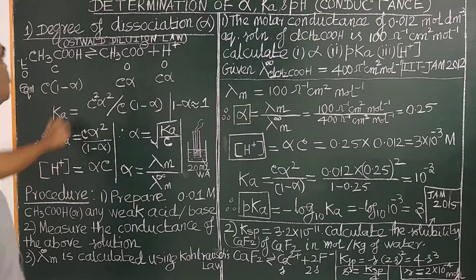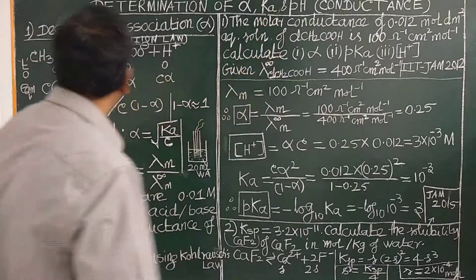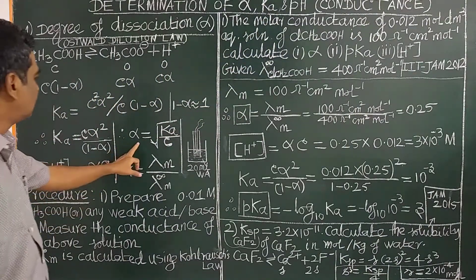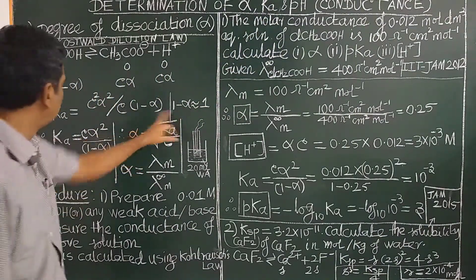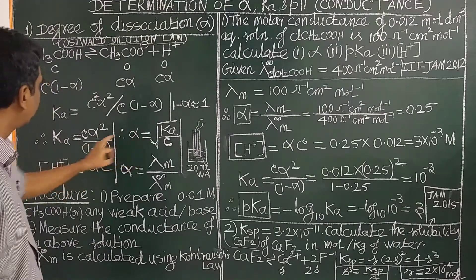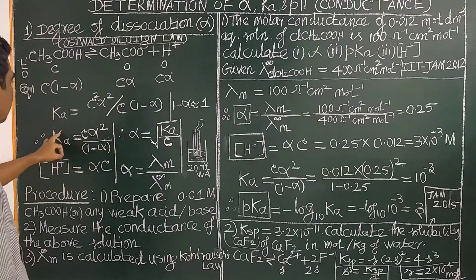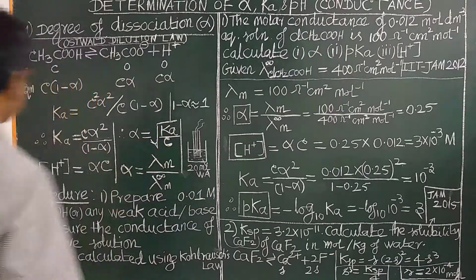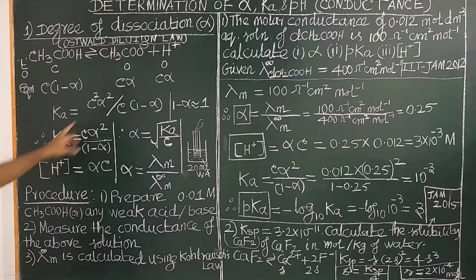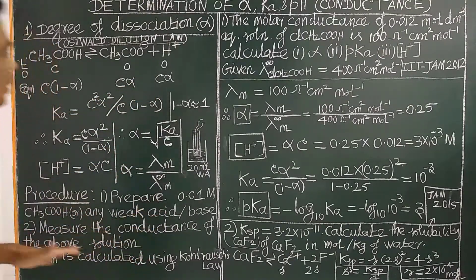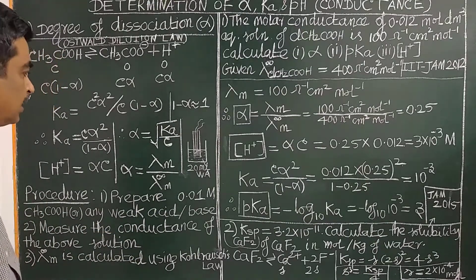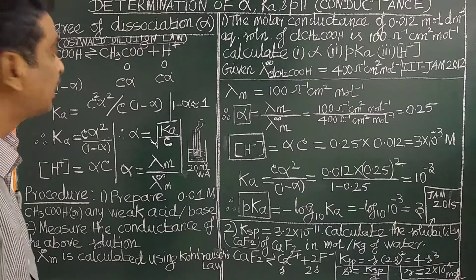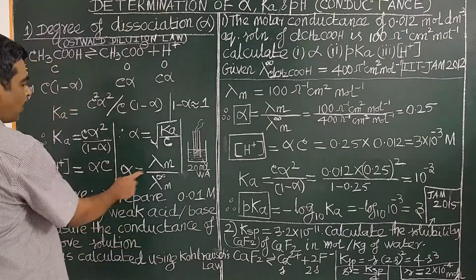Ka is the dissociation constant of the weak acid or weak base. If 1 − α ≈ 1, then Ka ≈ Cα², so alpha equals the square root of Ka/C. The concentration of H⁺ equals Cα. This is how the degree of dissociation is determined from conductance measurements.